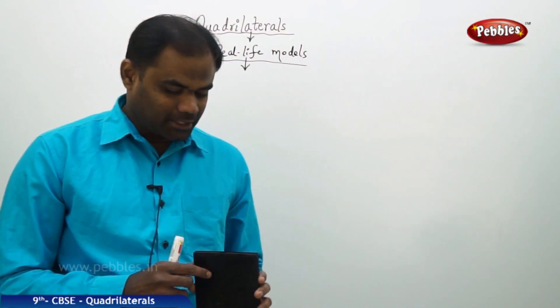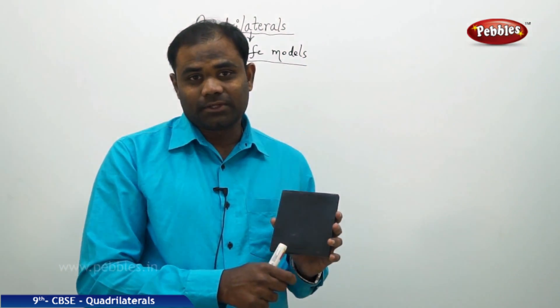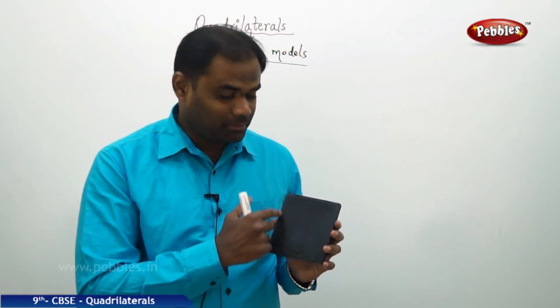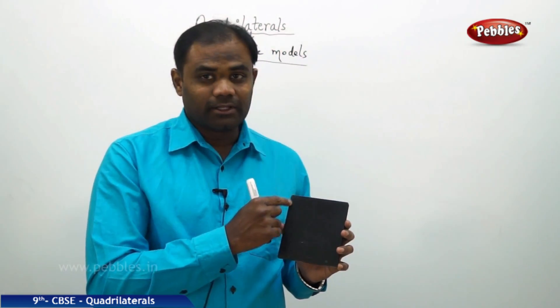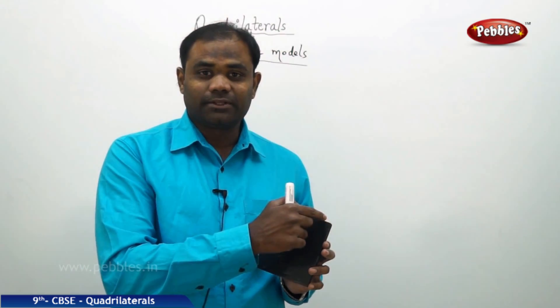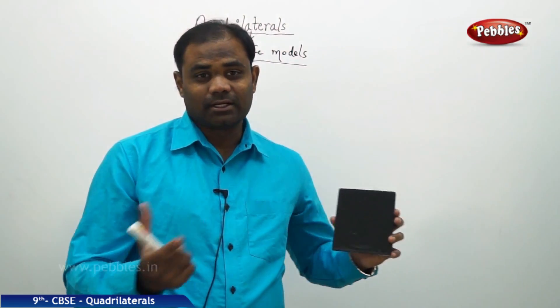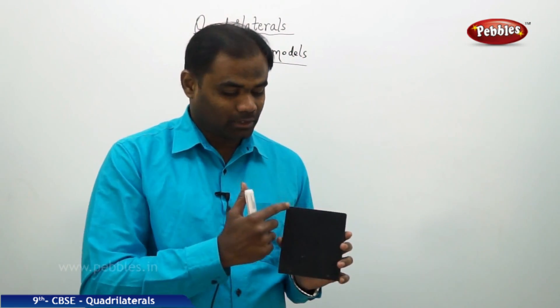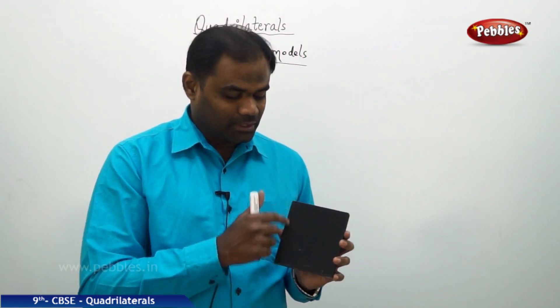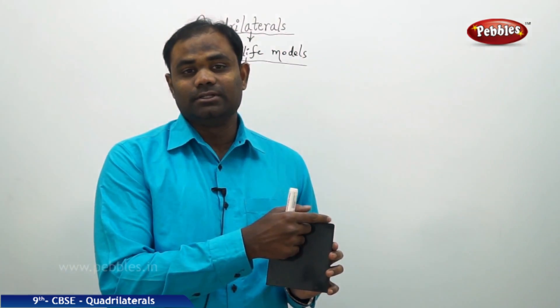Imagine I take this cover of a disc or a CD. The DVD disc cover is clearly in the shape of a quadrilateral because there are four straight lines — line 1, line 2, line 3, and line 4 — and the four lines are combined to form a closed region. So this is clearly a quadrilateral ABCD.